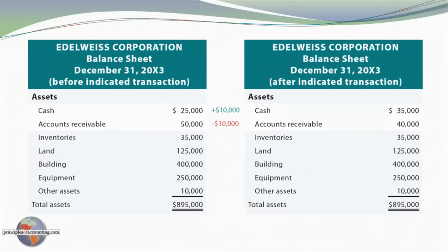Before the transaction, cash was $25,000. After the indicated transaction, cash was $35,000. Accounts receivable before the transaction was $50,000; after the indicated transaction, it's only $40,000. But notice total assets are not affected by that particular transaction — $895,000 before and $895,000 after. There's no effect on liabilities or equity in this particular case, so the fundamental accounting equation is preserved.